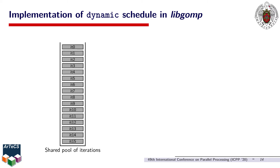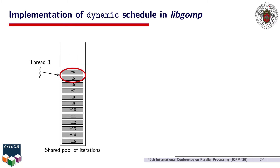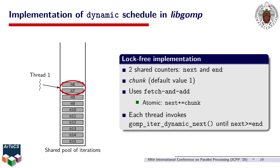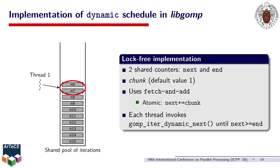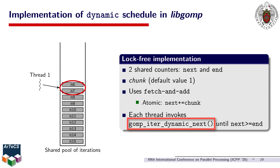For each loop, the runtime system maintains a shared pool of iterations remaining to be executed. When a worker thread runs out of work, it removes chunk iterations from the pool and then executes them. libgomp manages the shared iteration pool with a lock-free implementation, which relies on two shared counters: next and end. The first counter keeps track of the next remaining iteration in the pool, whereas the other one indicates which is the last iteration of the loop. Stealing a fixed number of iterations from the pool comes down to incrementing the next counter atomically, which happens in the gomp_iter_dynamic_next function — the one we modified to implement our AID methods.